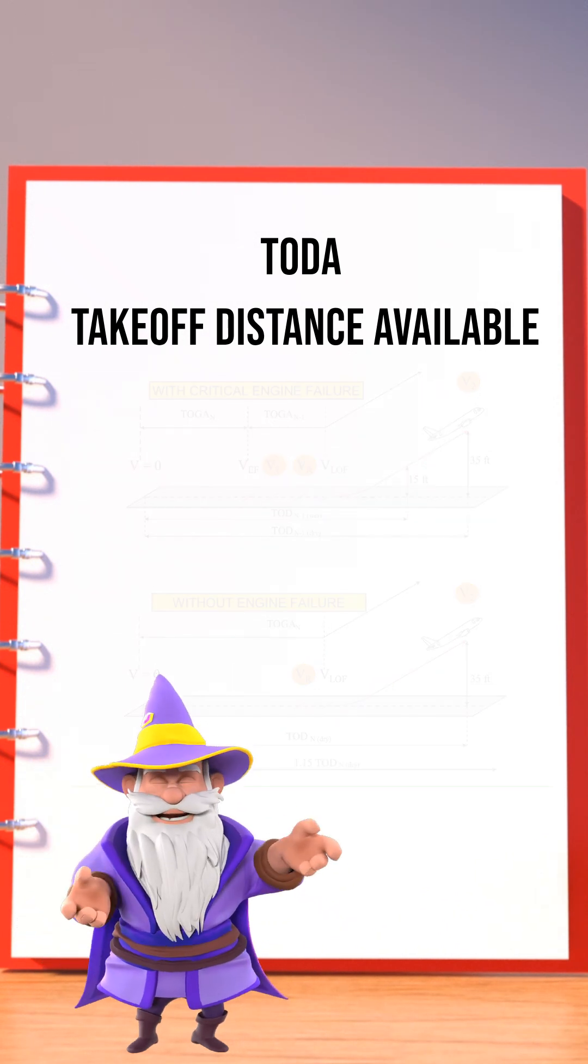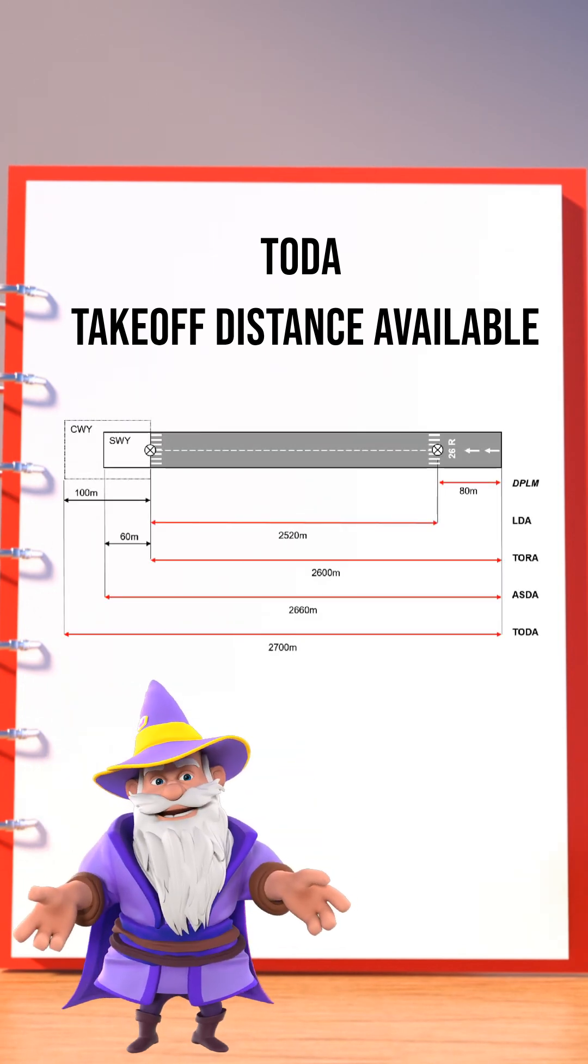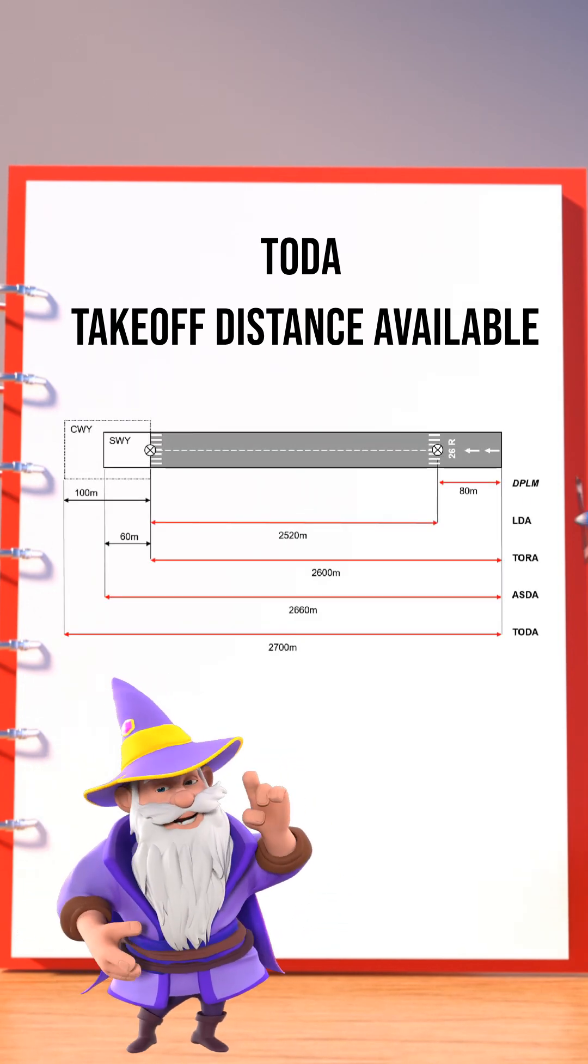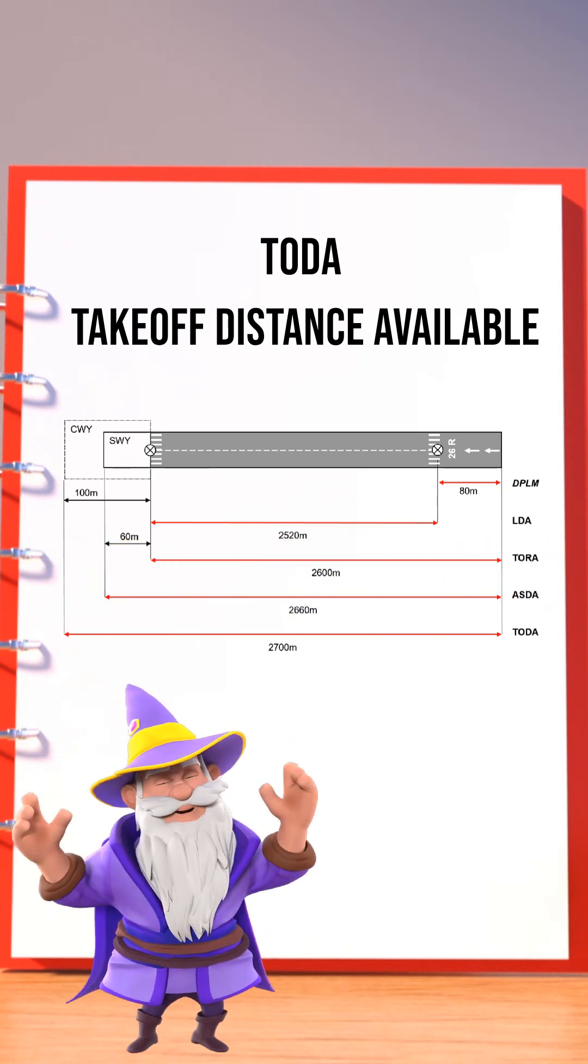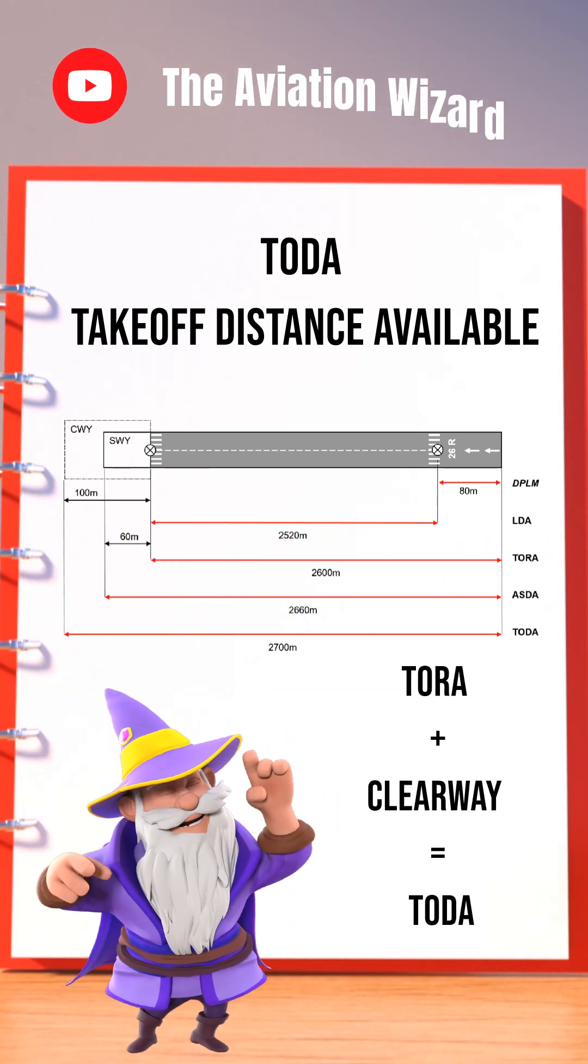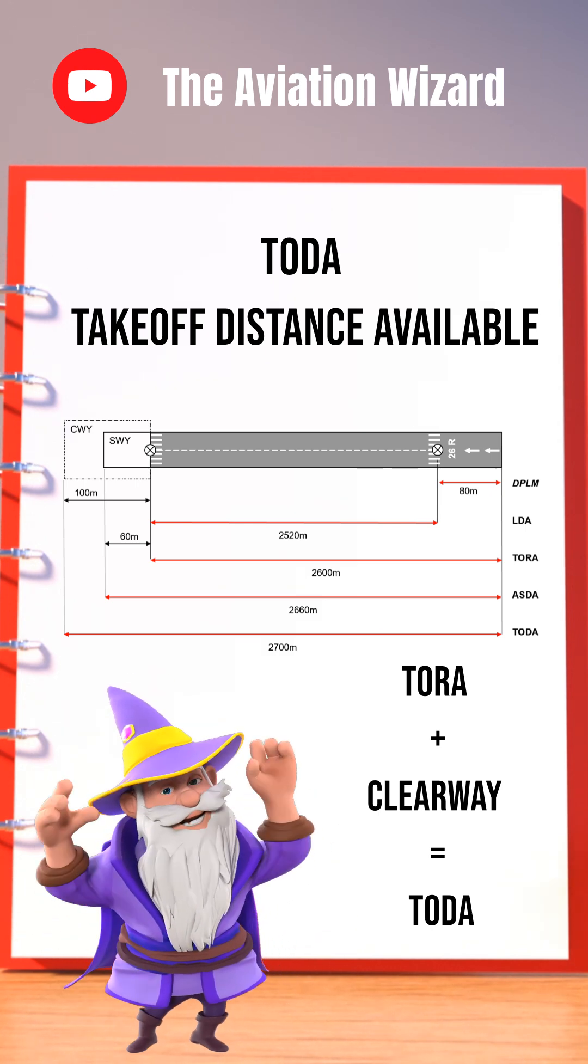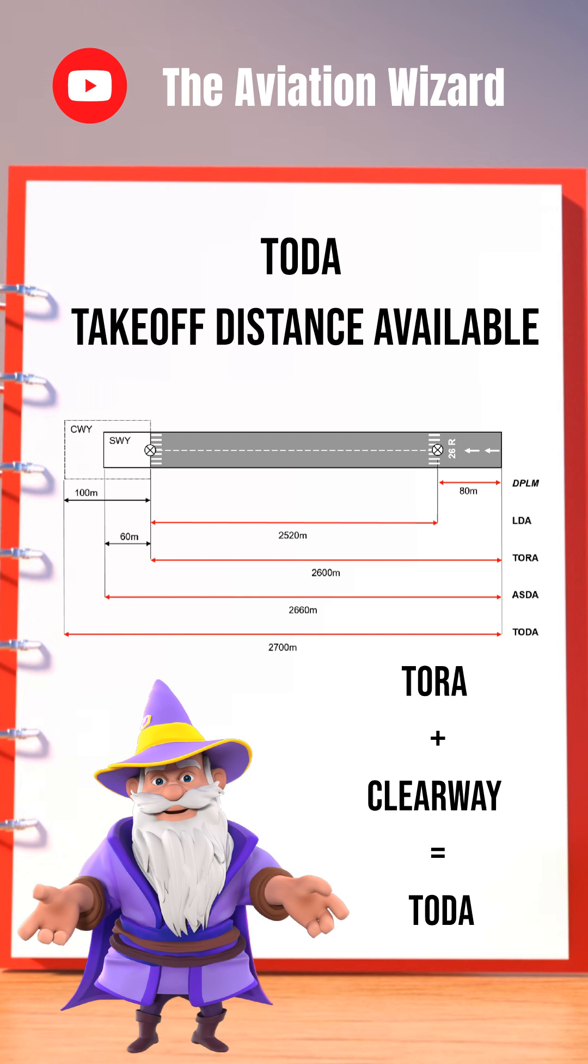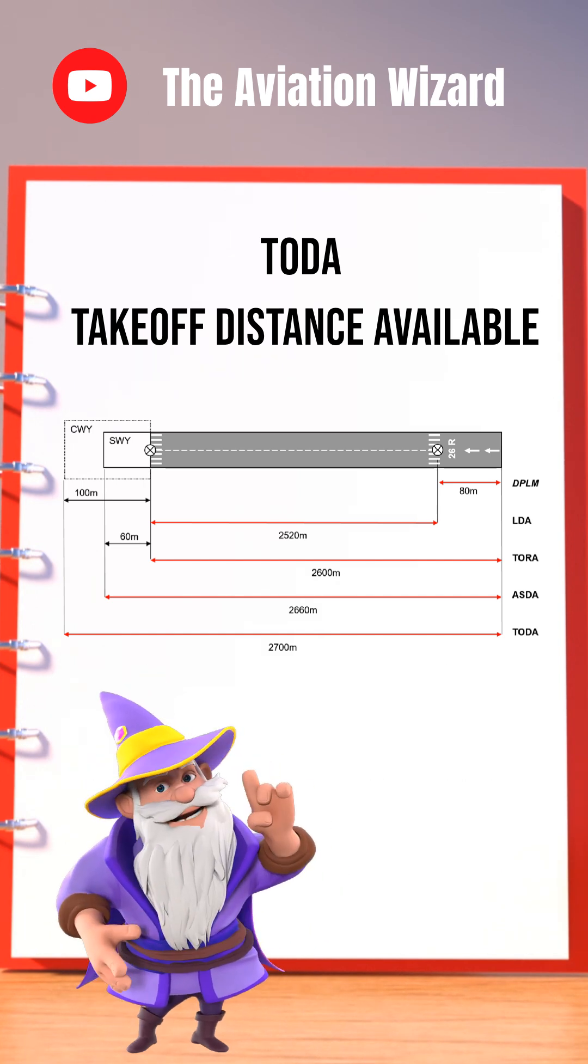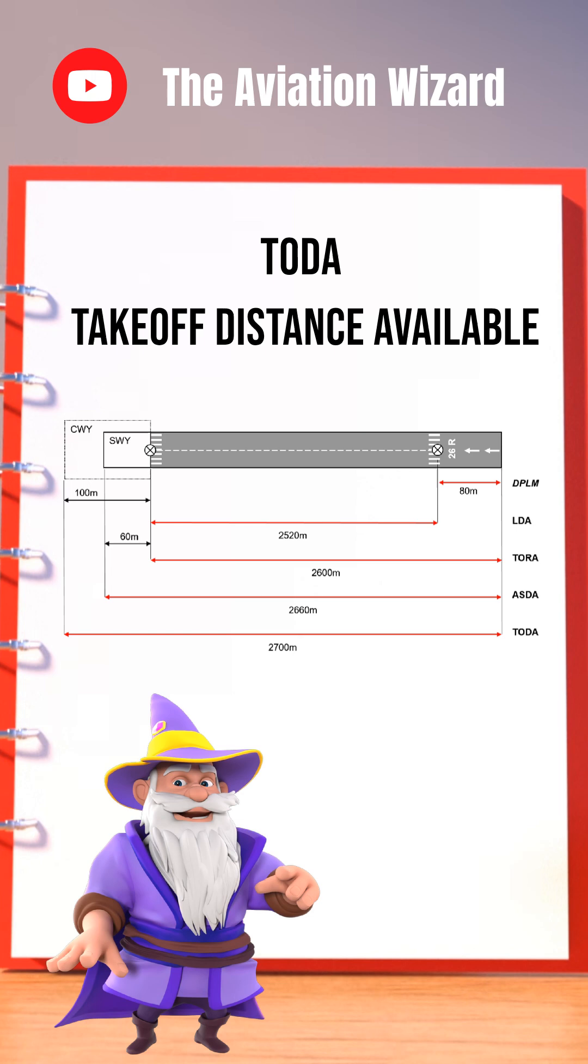Imagine a runway with a TORA of 2,600 meters and a clearway of 100 meters. The TODA becomes 2,700 meters. While you still need to complete your ground run within the 2,600 meters of TORA, the extra 100 meters in the clearway gives you vital climb margin to reach the necessary screen height.